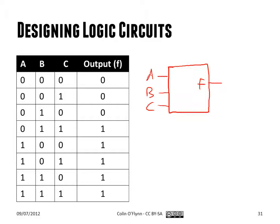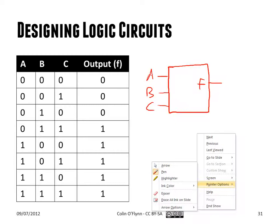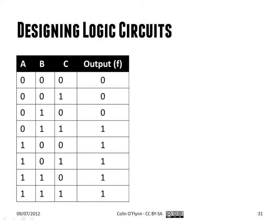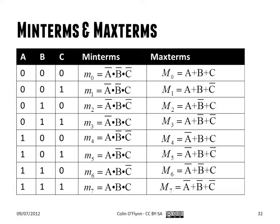How we go about designing this is we consider for each case the most straightforward way — simply to say that I will look at every single input and design logic such that the output is in the state I want for that group of bits. To do this, we use two things: either minterms or maxterms.